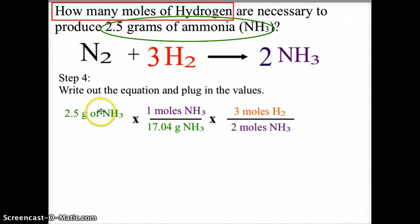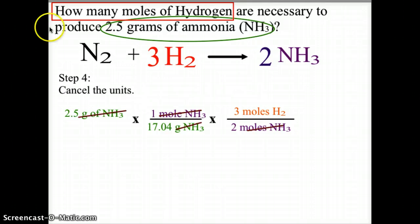So the grams of ammonia cancels with the grams of ammonia. The moles of ammonia cancels with the moles of ammonia. This will end up leaving us with moles of hydrogen, which from our question is what we want.